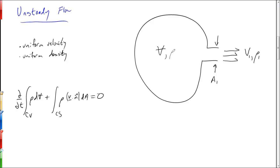has to equal zero and this time we don't get to cross off the first term because we are considering unsteady flow. There was a change in density over time within this volume here and so we can't just ignore that and cross it off.